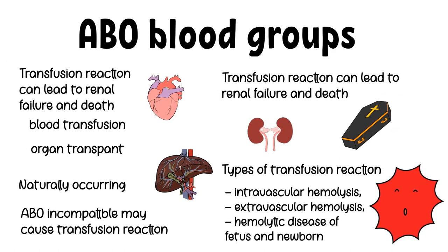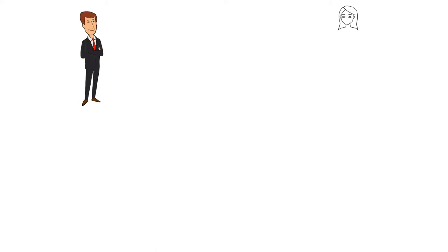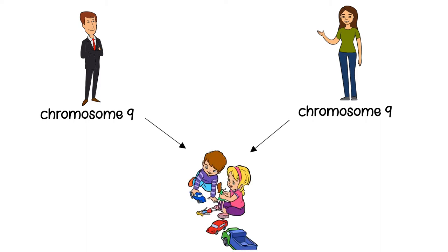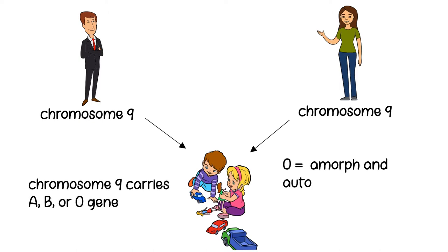Now let's get back to ABO blood group systems and talk about genetics. Genetics and inheritance of ABO blood groups: we inherit one ABO gene from each parent, located on chromosome 9. Chromosome 9 from mother and father make up the offspring's blood type. Each chromosome carries A, B, or O, while O is considered amorph because the O allele encodes for a non-functional enzyme. O-group phenotype is an autosomal recessive trait, which means the offspring has to inherit it from both parents to express the trait.